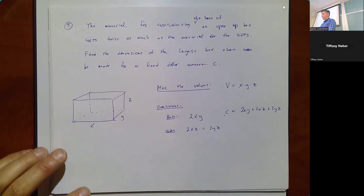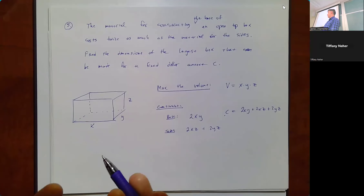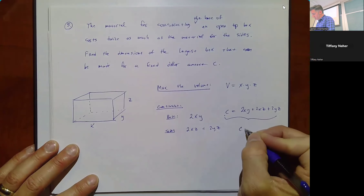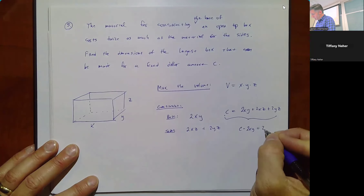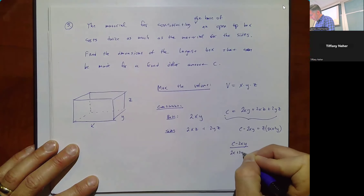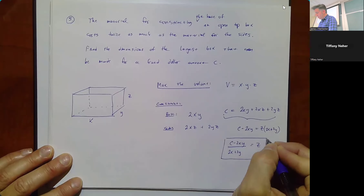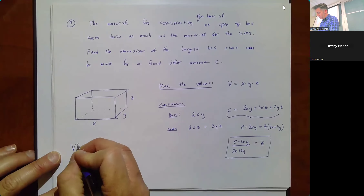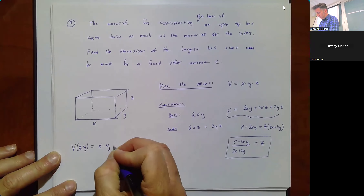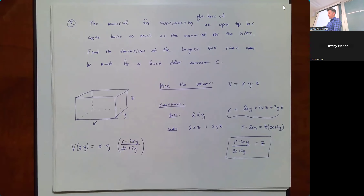If we had a specific dollar amount, we'd set it equal to C. We're solving for z in terms of x and y: C - 2xy = z(2x + 2y), so z = (C - 2xy)/(2x + 2y). Substituting into the volume function gives V(x, y) = xy · (C - 2xy)/(2x + 2y).